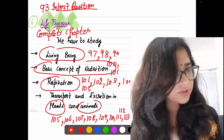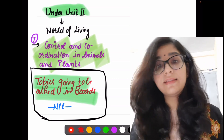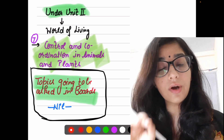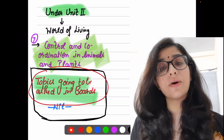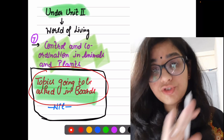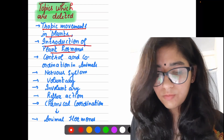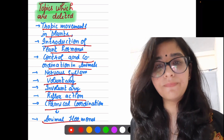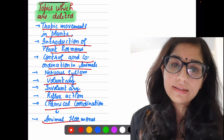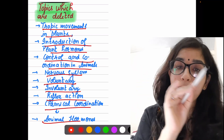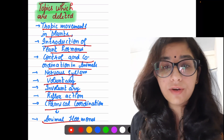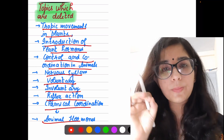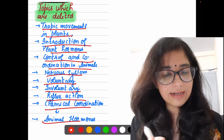Now Chapter 7: not even a single topic is going to be asked from this chapter in your board exam. This entire chapter has been deleted — Tropic Movements, Plant Hormones, Coordination in Animals, Nervous System, Voluntary Reflex — every single topic. Put a cross on Chapter 7, which starts from page number 114. It is not to be done, not to be asked in the board exam.